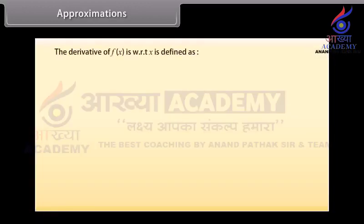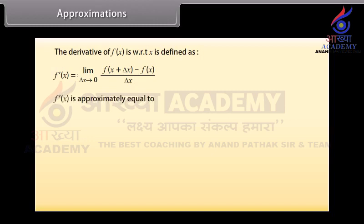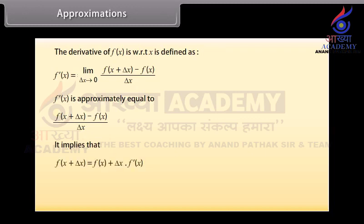Approximations. The derivative of f(x) with respect to x is defined as f dash of x equals the limit as delta x approaches 0 of (f of x plus delta x minus f of x) divided by delta x. Approximately, f dash of x equals (f of x plus delta x minus f of x) divided by delta x. This implies that f of x plus delta x is approximately equal to f of x plus delta x times f dash of x, which is called the approximate value of f of x plus delta x.